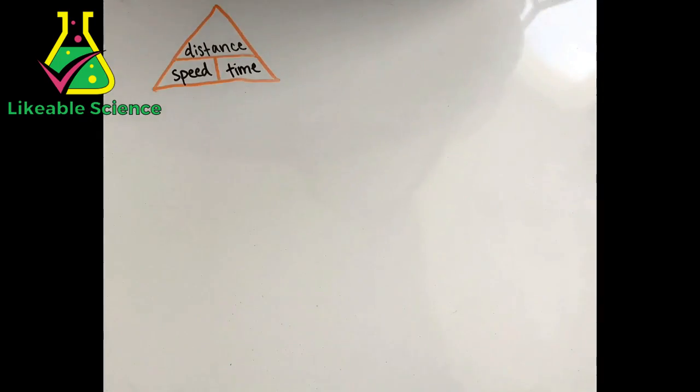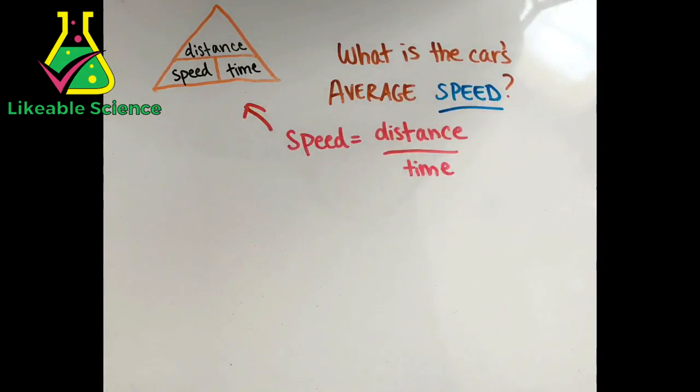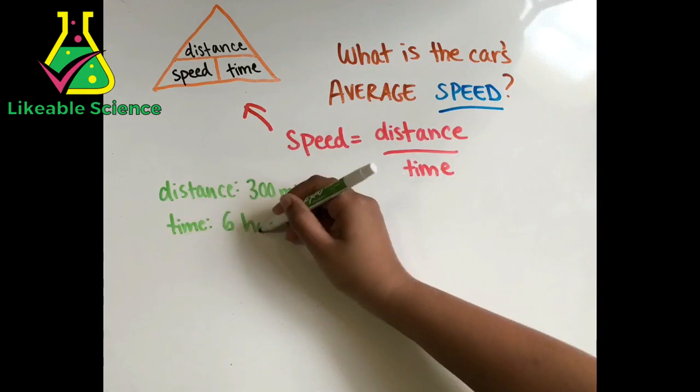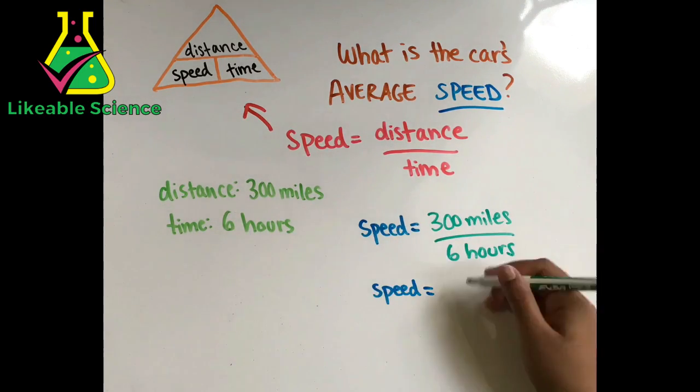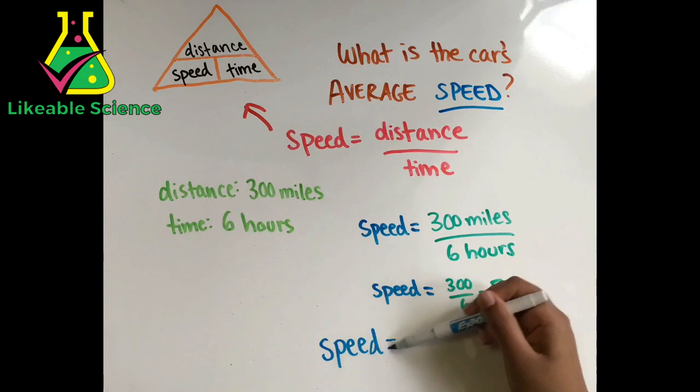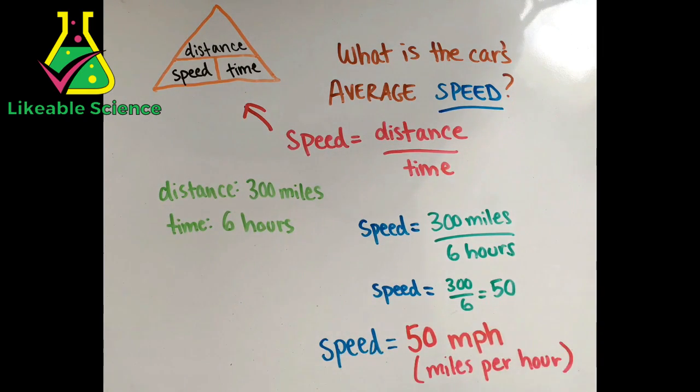We need to solve for speed. So the equation is speed equals distance over time. The distance the car drives is 300 miles and the time it drives is six hours. So the car's speed is 300 miles over six hours. 300 divided by 6 is 50, but we also need to include both of the units in our equation. We divided the miles by the hours, so the answer would be 50 miles per hour or 50 mph.